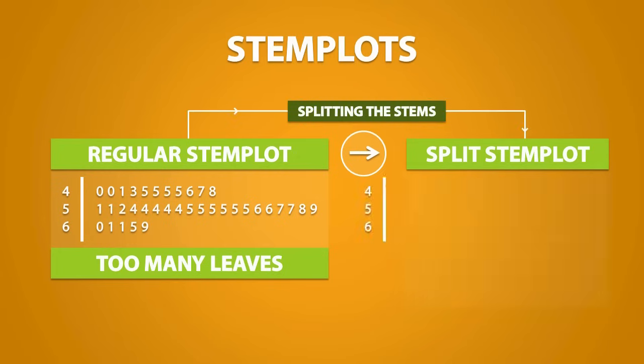To split the stems, we need to duplicate each stem. The first stem will run from 0 to 4, which corresponds to these values. And the second stem will run from 5 to 9, which corresponds to these values. The same logic can be applied to the rest of the stems.